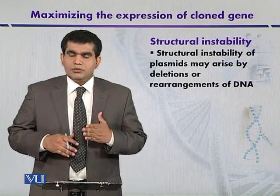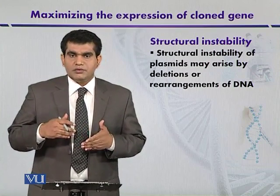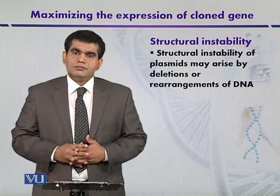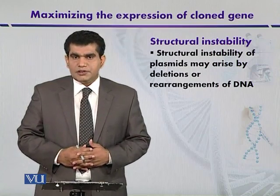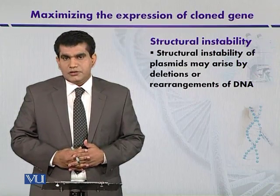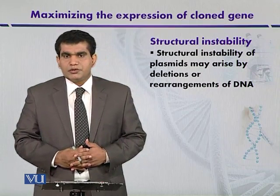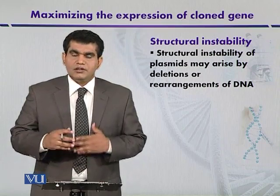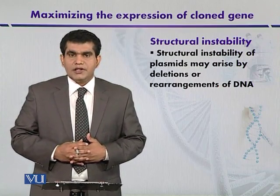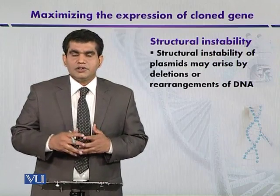Although homologous recombination is said to be involved in structural instability, other parts of the DNA such as insertion sequences, IS sequences, or transposons can also introduce structural instability in plasmids. It has been noticed that these transposons and IS sequences introduce additions or even inversions in the plasmid DNA, and some parts of chromosomal DNA have been shown to be integrated into the plasmid DNA, introducing structural instability.